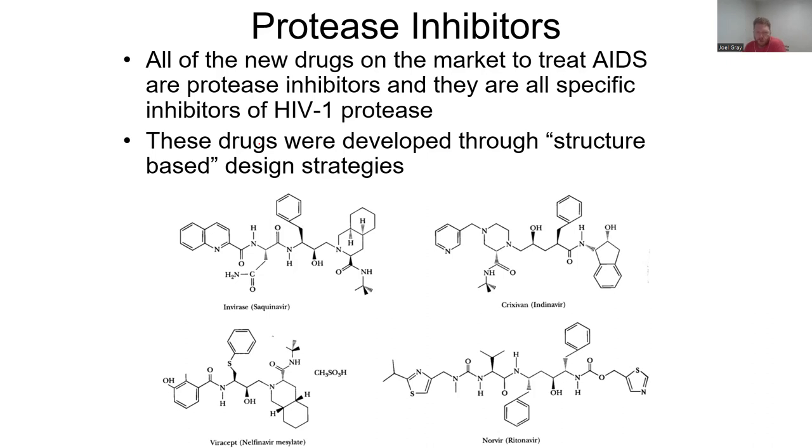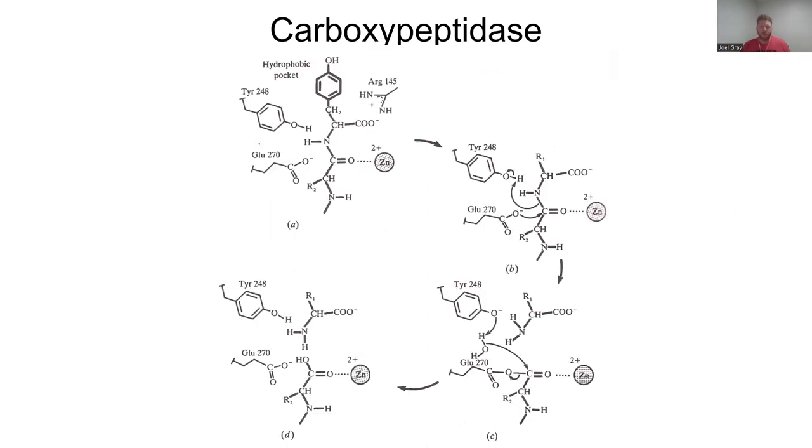Protease inhibitors are great examples of drugs to develop. All the new drugs on the market to treat HIV and AIDS are protease inhibitors and they are all specific inhibitors of HIV-1 protease. If you can block that protease that's responsible for the subsequent infection, that's a very great target to ultimately undermine the ability of the virus to replicate and infect. These drugs were developed through structure-based design strategies. They established the structure of the protein and said, here's the active site, we're going to design a molecule that matches or that lands right there. A 3D structure, the tertiary structure of a protein, is very valuable because if you know what a protein looks like and you can lock it in that position or manipulate that structure, then maybe you can control whether a virus replicates. Here are some examples of protease inhibitors.